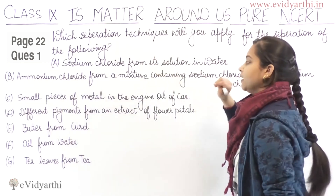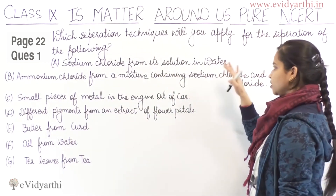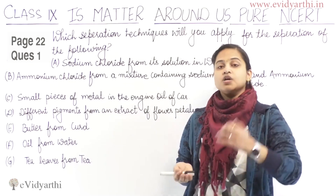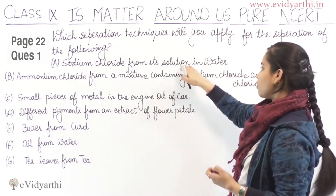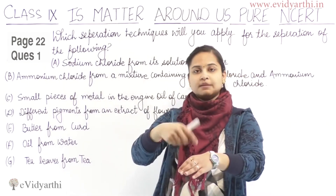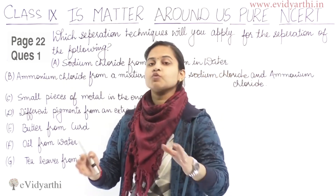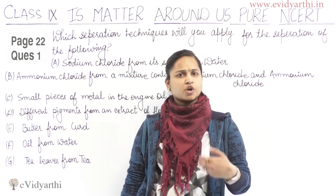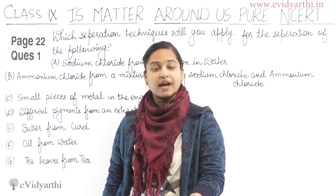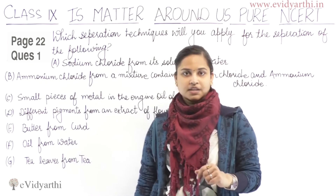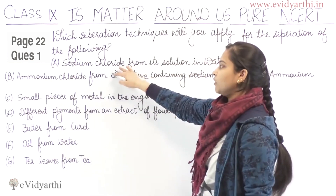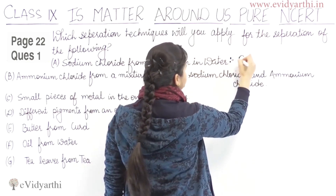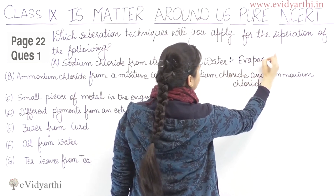The first part is Part A: Sodium chloride from its solution in water. How do we separate sodium chloride from its solution in water? Sodium chloride is mixed in the water. If we want to separate it, we will use the process known as evaporation. Using the evaporation technique, we can separate sodium chloride from its solution. So the answer is evaporation.